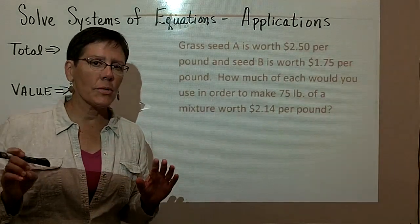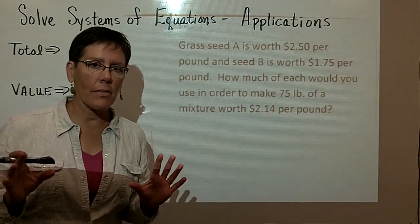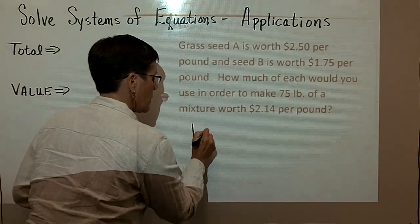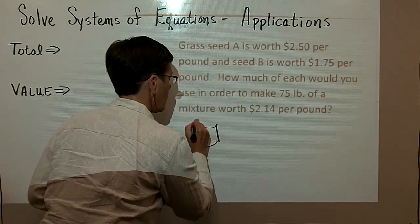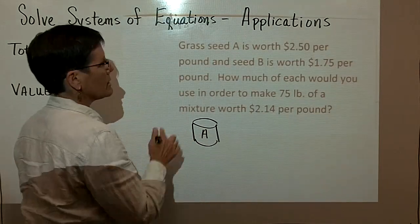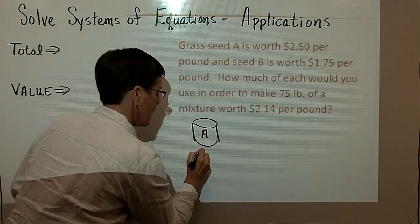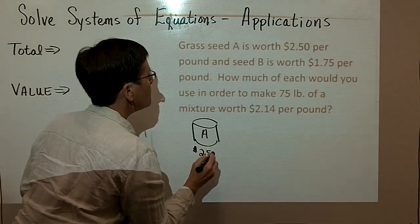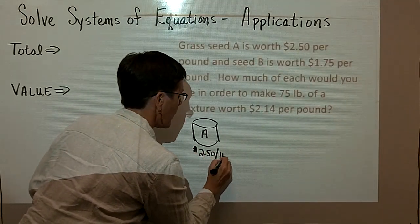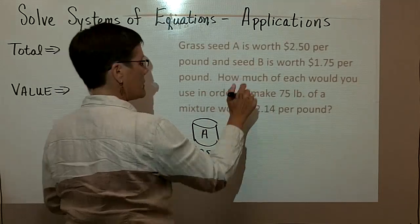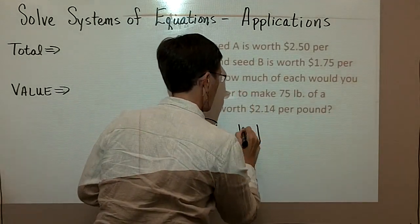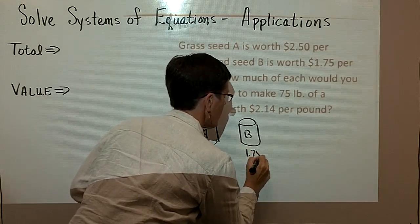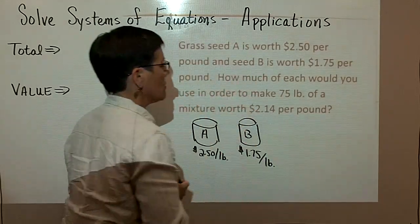So all I'm going to do in describing this problem, I'm not going to do the math that's involved or solve it. But if you wanted to, in what I call a mixture problem, you could draw bucket A. It has grass seed A in it, and just write yourself a note that it costs $2.50 per pound. And seed B is in the next bucket and it costs $1.75 per pound.